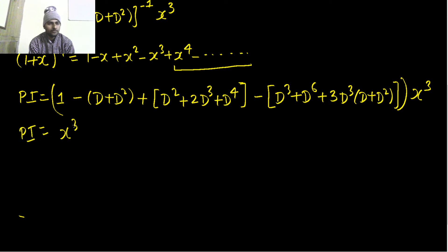Keep on multiplying, so particular integral will be 1 multiplied by x³ is x³, minus D of x³ gives minus 3x², D² of x³ is 6x, so minus 6x.